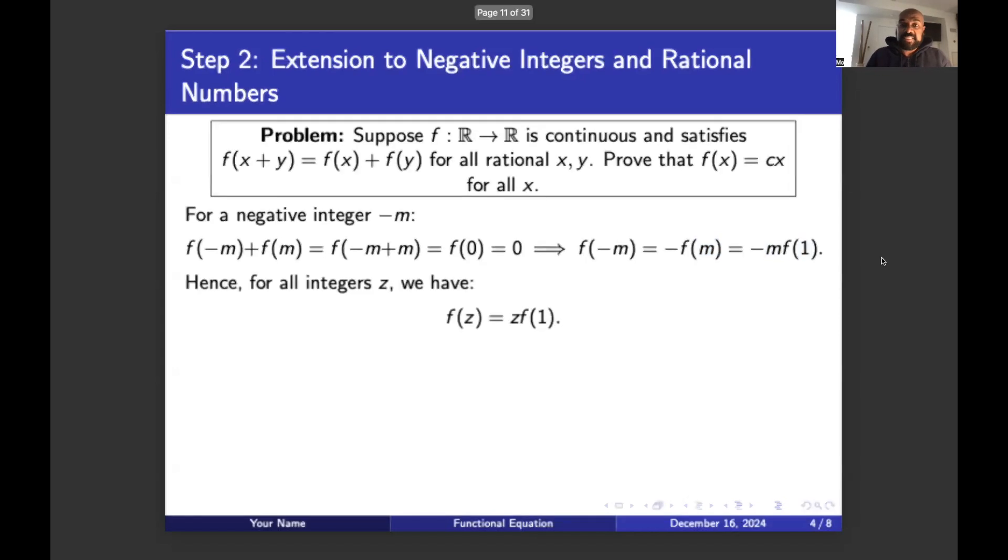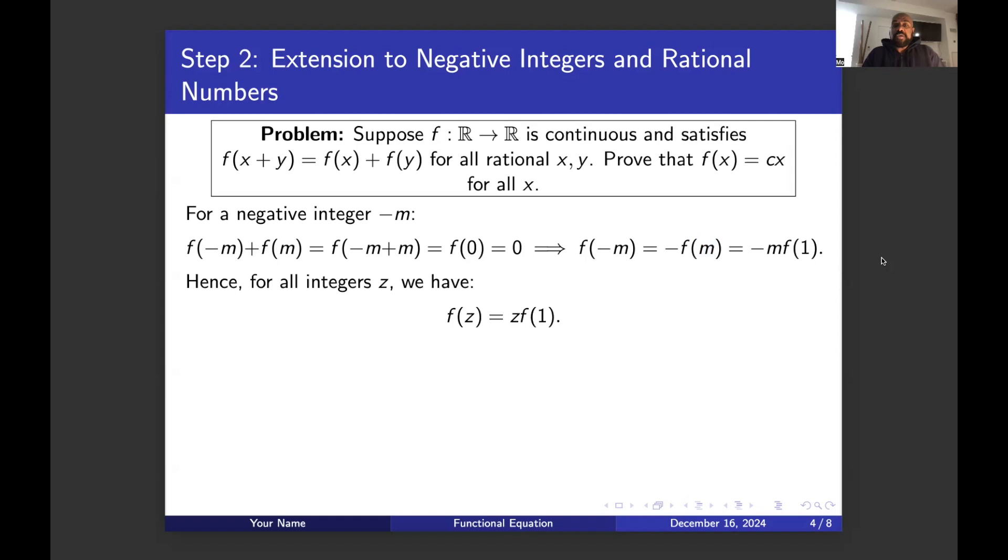So if we piece things together then, we already proved this equality that f of any number is that number times f of one, when that number is a positive integer. Now we have the same case for negative integers, right over here. And so we have this equality regardless of what integer we select. And now we're going to be able to use this to actually figure out something about plugging in rational numbers.